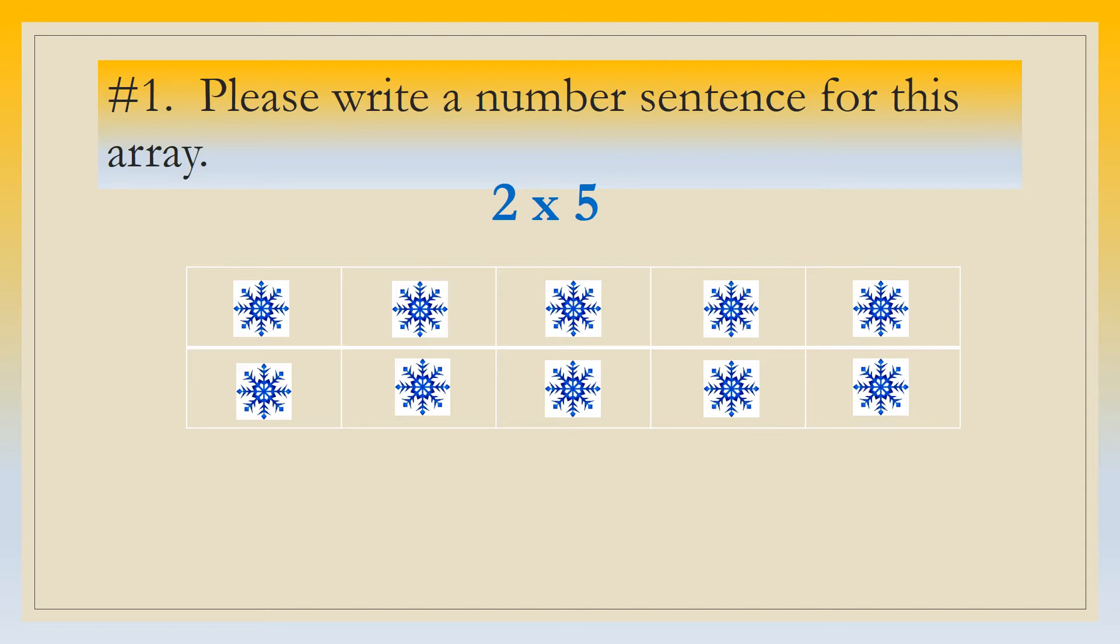Your sentence should have looked something like this. Two times five. There are two rows of five snowflakes. Pause the video and do twenty scissor kicks and then hit play when you're done to move on.